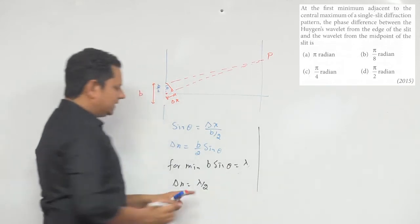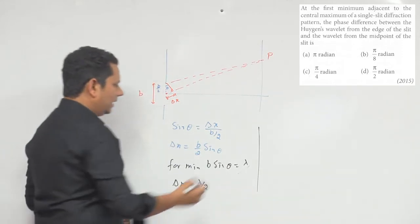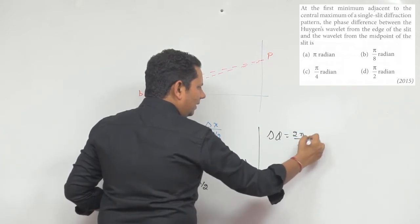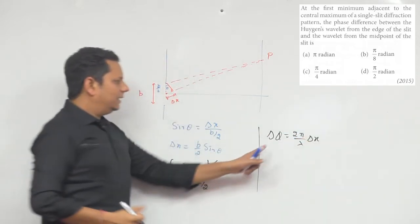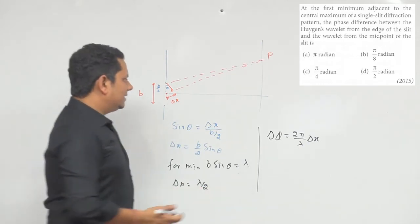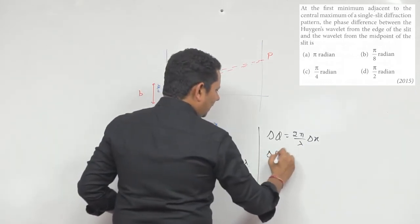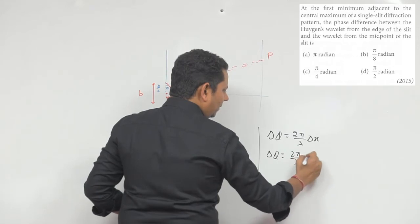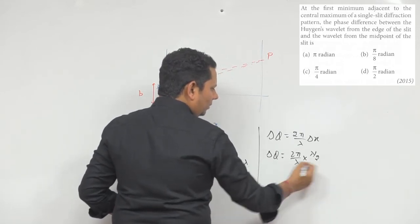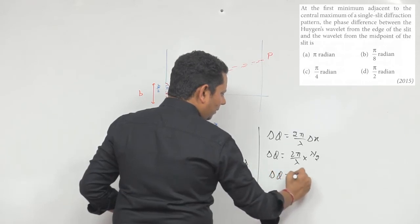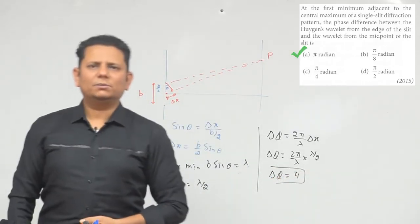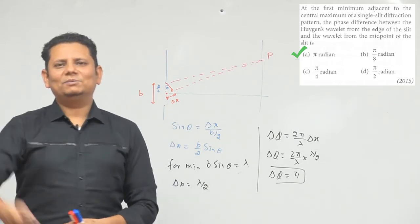Now, if delta x is lambda by 2, then the phase difference delta phi is given by 2 pi by lambda multiplied by delta x. So delta phi equals 2 pi by lambda multiplied by lambda by 2. Lambda and 2 cancel, so delta phi is pi. Based on this, we can say that option A, pi radian, is the right answer.